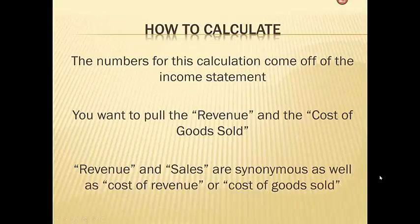So how to calculate gross profit margin — the numbers for this calculation will come off of the income statement. You will want to pull revenue, and sometimes you may see revenue shown on an income statement as sales. Sales and revenue are the same thing, as is cost of goods sold or cost of revenue.